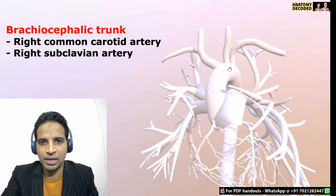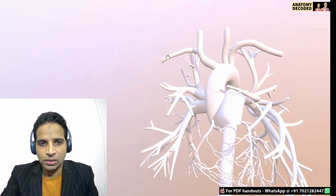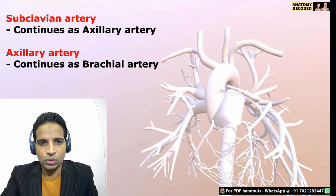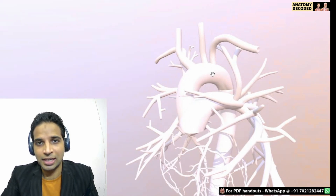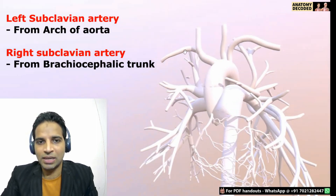The subclavian artery courses towards the lateral aspect and will ultimately continue as the axillary artery, and the axillary artery will continue as the brachial artery to supply the upper limb. So subclavian arteries are the chief arterial supply for the upper limb. Note that the left subclavian artery arises directly from the aorta, while the right subclavian artery is a branch from the brachiocephalic trunk.